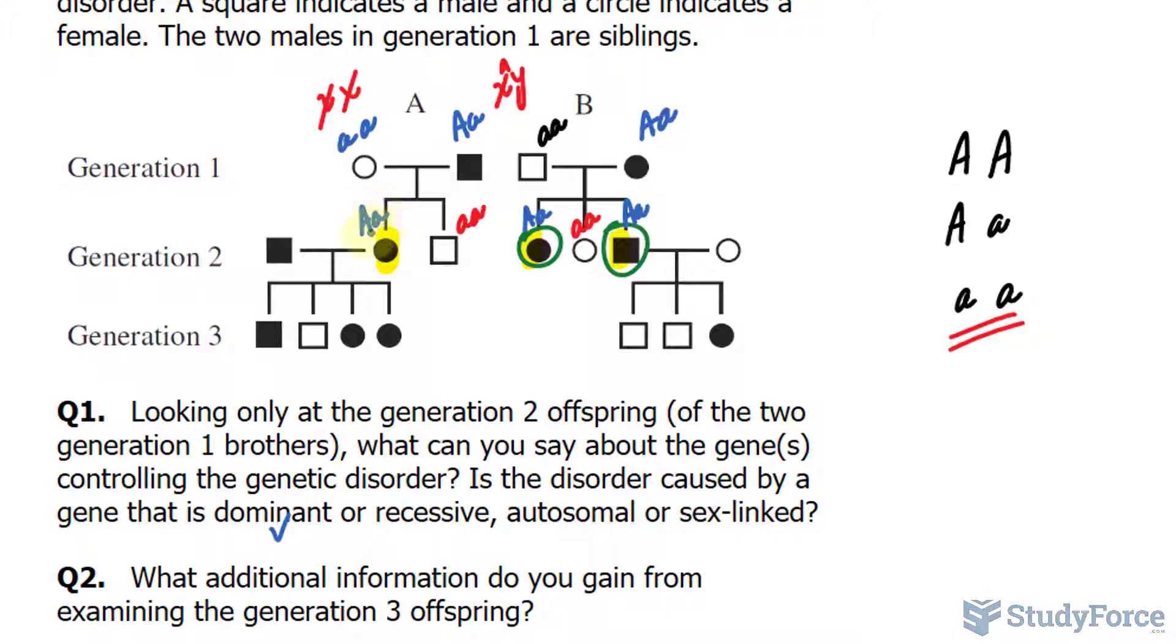...we have capital A little a, and this person is affected, meaning either they are capital A capital A or capital A little a. Given that they have a child that is not affected, it's most likely heterozygous, because heterozygous crossed with heterozygous will produce a child that is healthy.